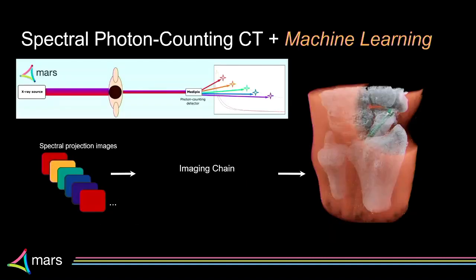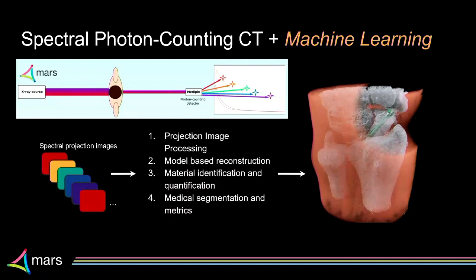So where does machine learning fit into spectral CT? If you're aware of the complex algorithms involved in taking 60 gigabytes worth of projection image data and generating those final images, you'll know that it takes many steps. I've broken those steps down into: projection image processing, model-based reconstruction, material identification and quantification, and medical segmentation and metrics. That flows from the data stream left to right, from pre-processing all the way through. Machine learning belongs in all of these spaces — that's how we make it not a black box magic solution. We attack a narrow AI problem at each step.